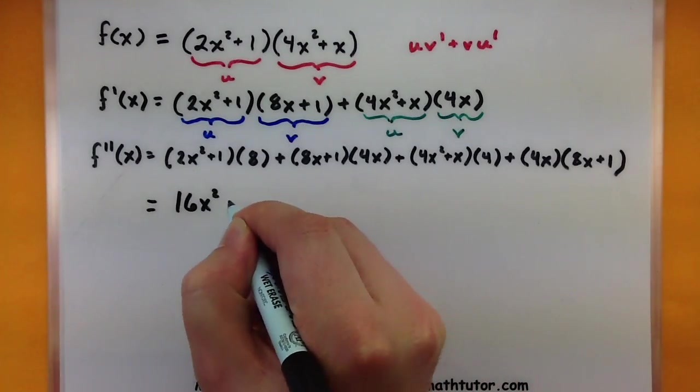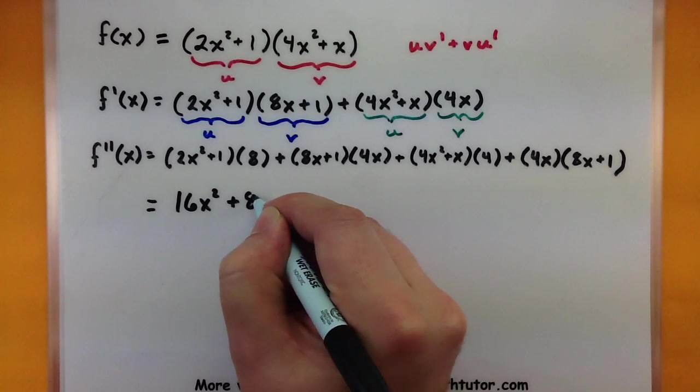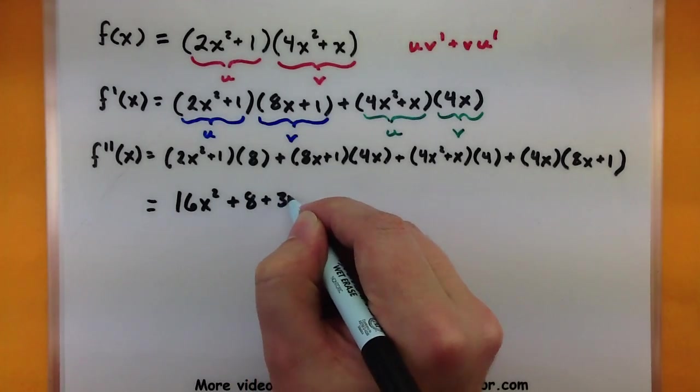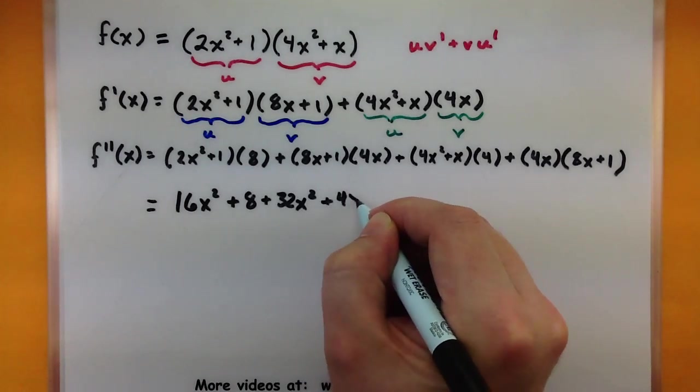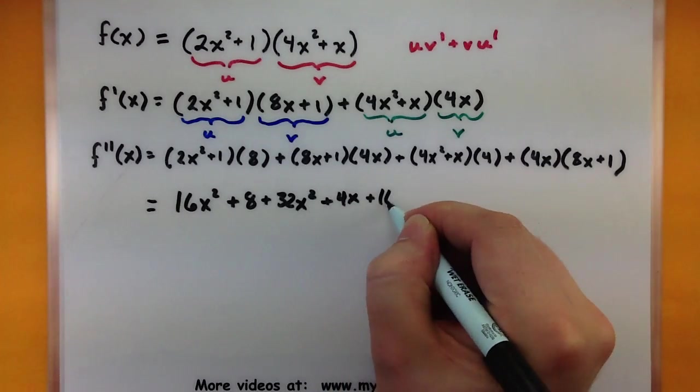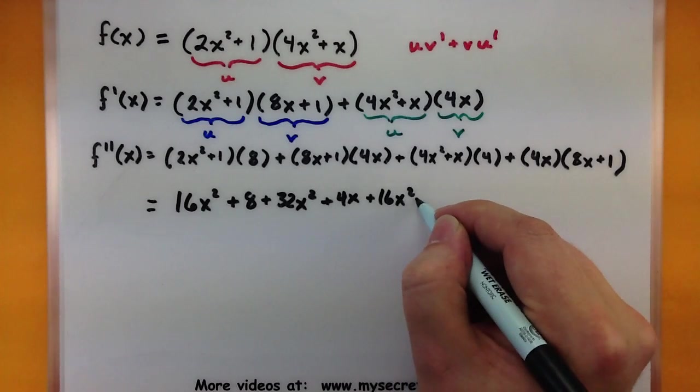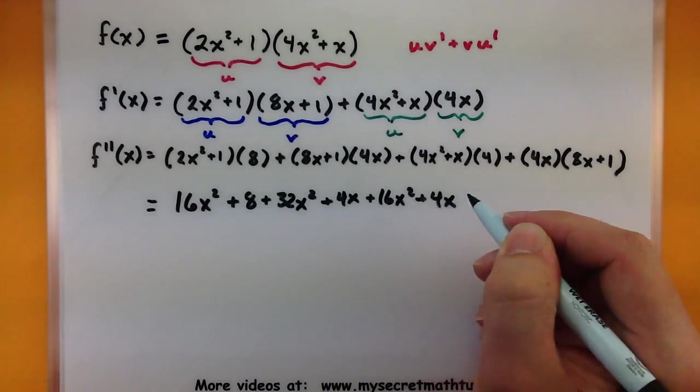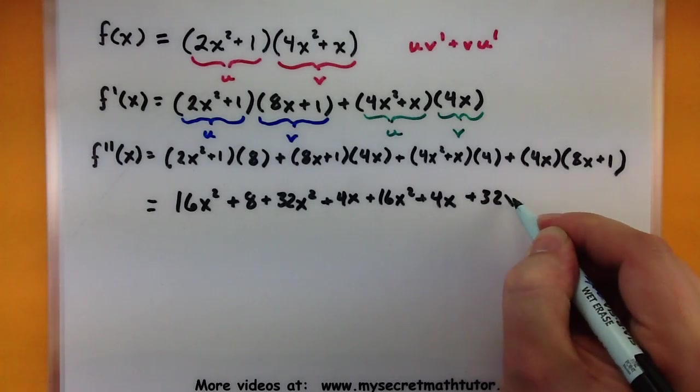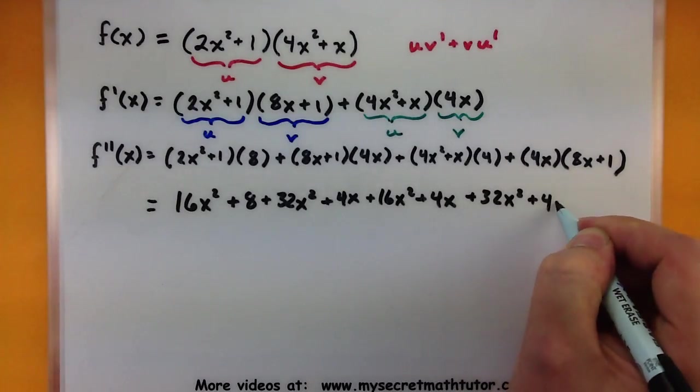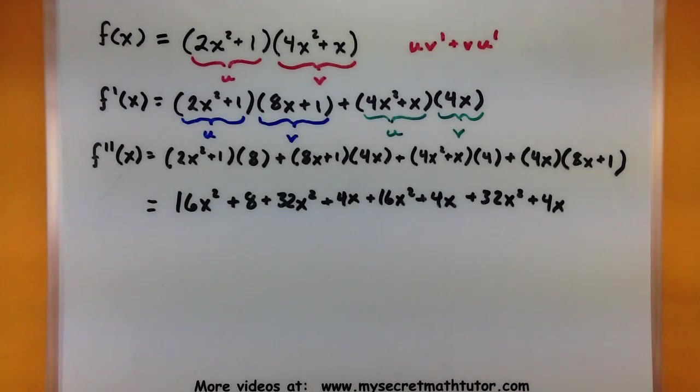So I get a 16x squared plus an 8 plus 32x squared plus 4x plus 16x squared plus 4x. Now I need to distribute this one in here. Plus 32x squared plus 4x. A lot of different things in here.